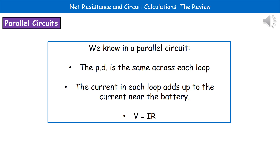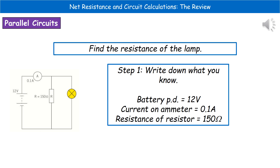Now consider what we know about parallel circuits. There are three important facts: first, the potential difference is the same across each loop; second, the current in each loop adds up to the current near the battery; and third, V = IR. A typical question is: find the resistance of the lamp, given a parallel circuit diagram.